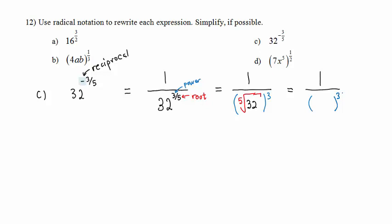What is the fifth root of 32? 2. Because 2 multiplied together with itself 5 times gives you 32. So we have 1 divided by 2 times 2 times 2 is 8. Our answer is 1 eighth.